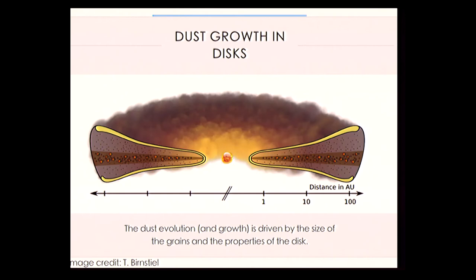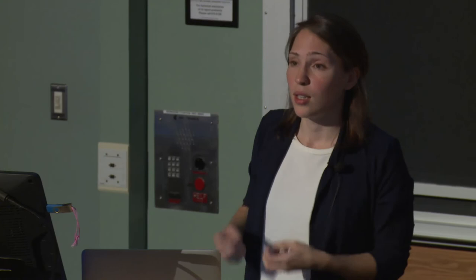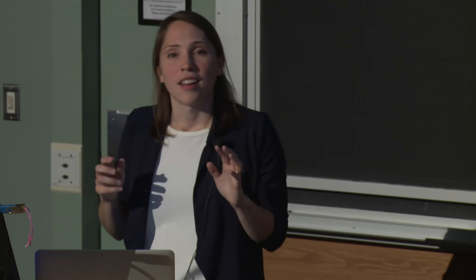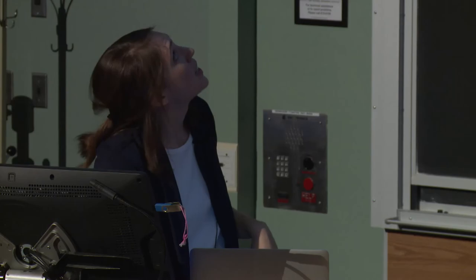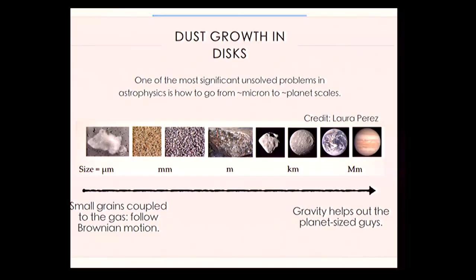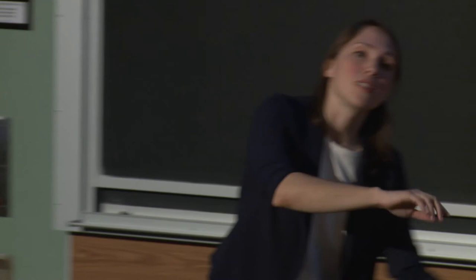The way grains grow is key: you start with lots of small grains — one hundredth the size of a human hair, filling the interstellar medium. Those have to get all the way to large rocky planets like Earth or the cores of Jupiters. This is one of the biggest unsolved problems in planet formation. It's easy at the beginning because small grains are coupled with gas. At the end, gravity helps. But in the middle, grains are typically lost by aerodynamic drag forces or they collide and fragment — getting smaller rather than bigger.